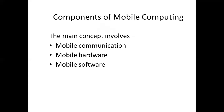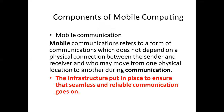The three pillars are: mobile communication, mobile hardware, and mobile software. We'll discuss each on its own. Mobile communication refers to a form of communication which does not depend on a physical connection — that is, a physical link between the sender and the receiver — where both essentially have to move from one physical location to another during communication.